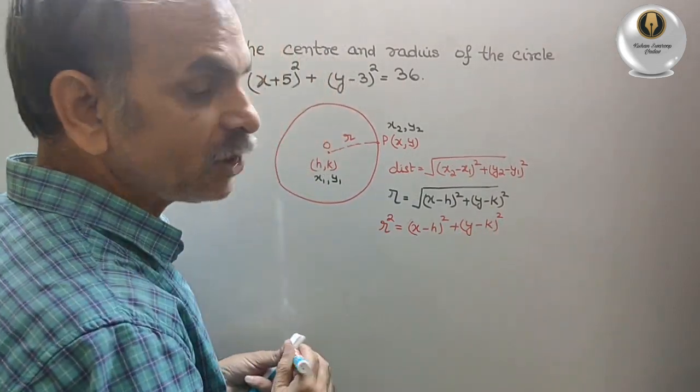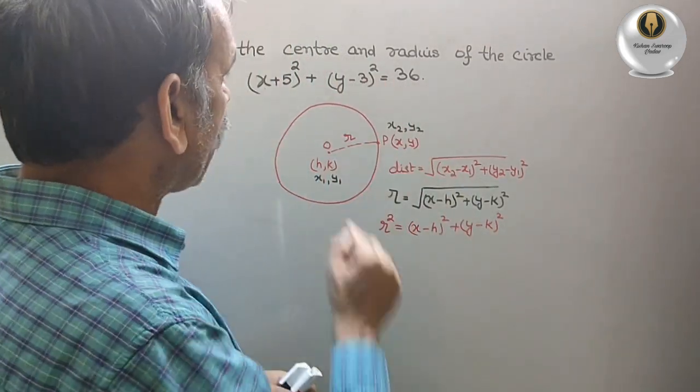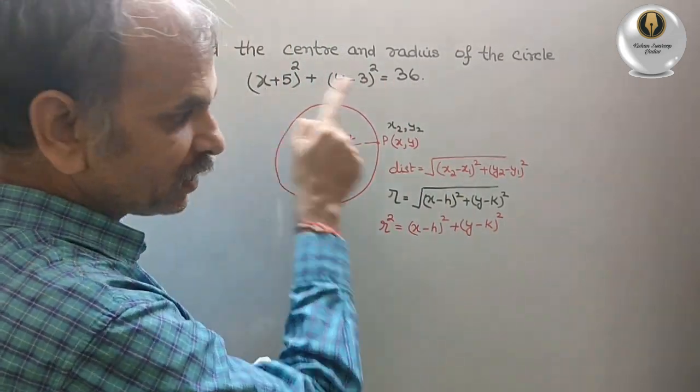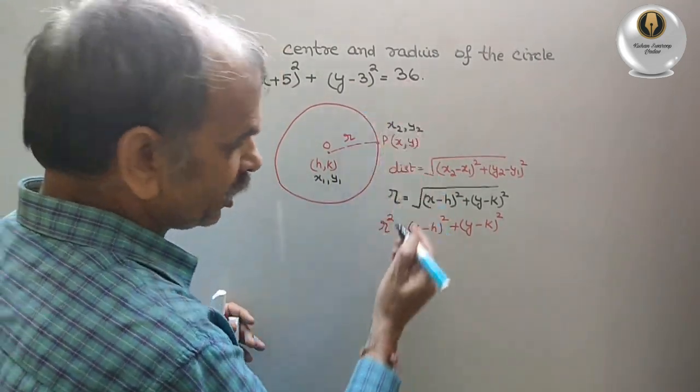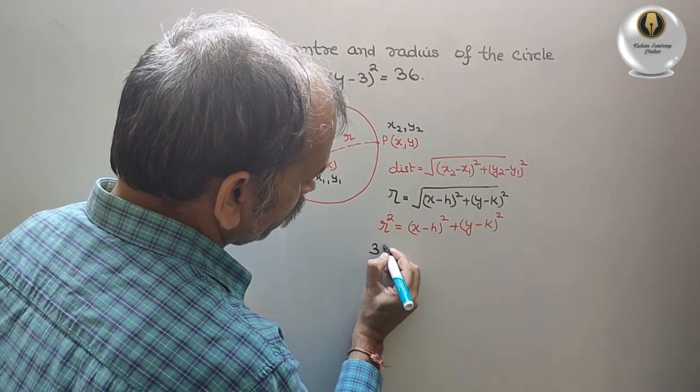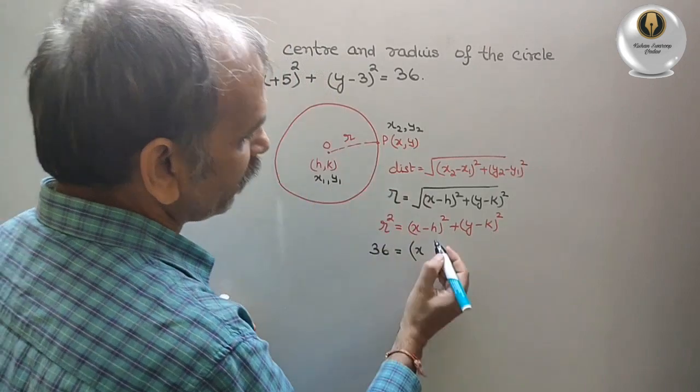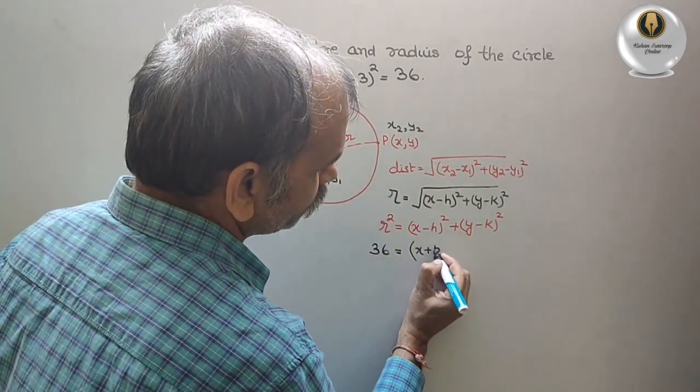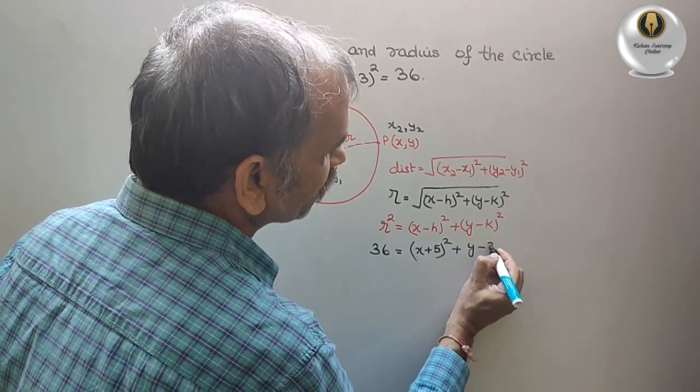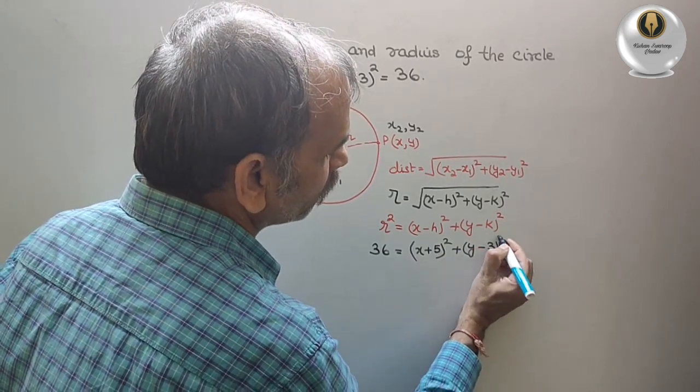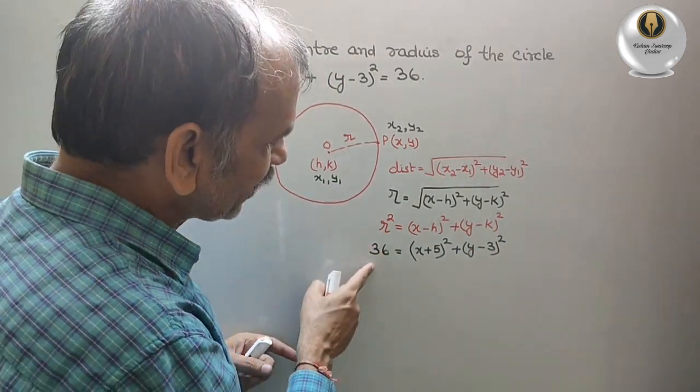Now we will write just this below this. You can see this is 36 that is equal to (x + 5)² plus (y - 3)². Now compare it, you can see r² is 36.